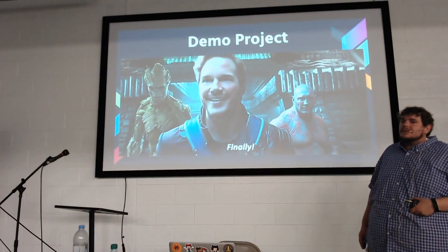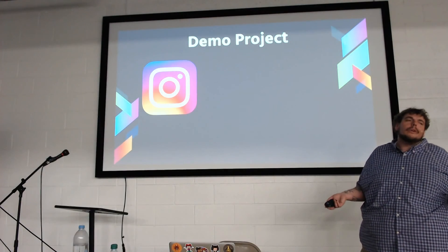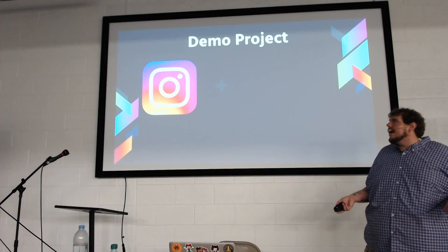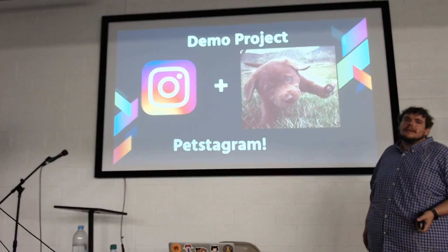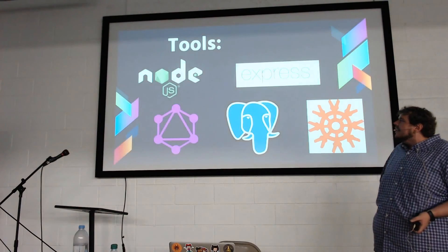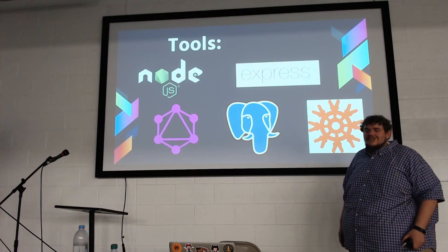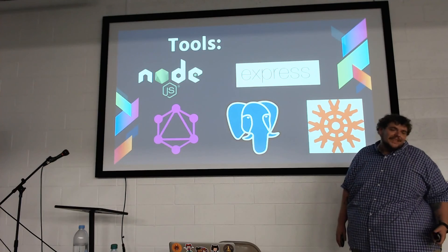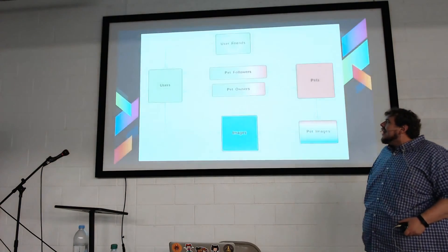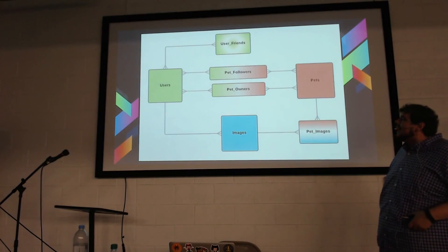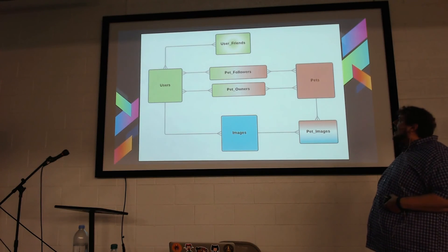Let's dive into a demo project. I was thinking Instagram's cool, but what if Instagram was only about pet pictures? So we're going to make Petstagram tonight. I'll be using Node.js and GraphQL — it is the Node.js meetup — along with Express, Postgres, and Knex. Looking at a simple ERD, we've got three major types: users, images, and pets, and some join tables to help store the data.